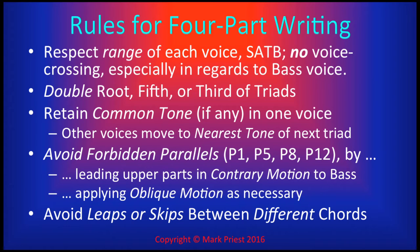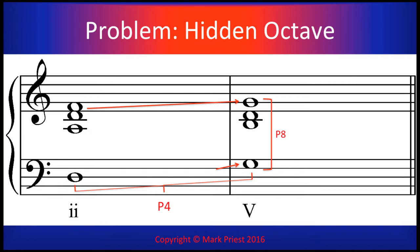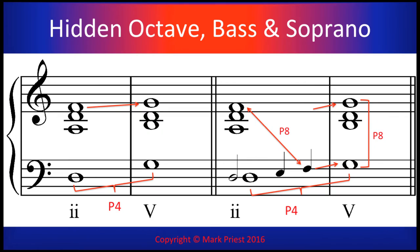Chords a fourth or a fifth apart, however, present a new problem. The main problem is octaves involving one or both of the outer voices. Soprano and bass progressing in similar motion from different intervals to an octave or double octave may produce not parallel octaves, but what we call hidden or concealed octaves.